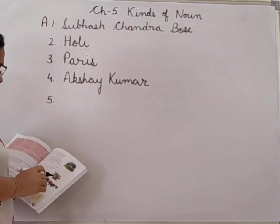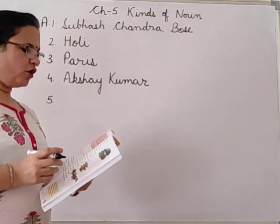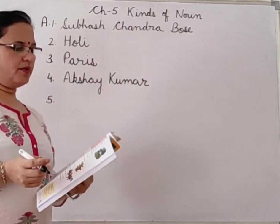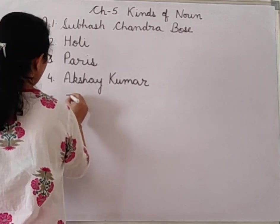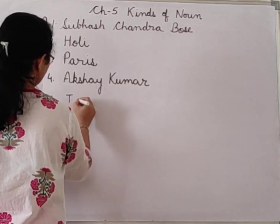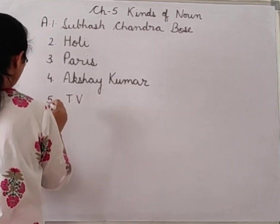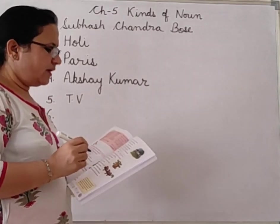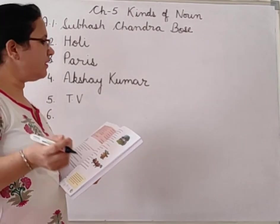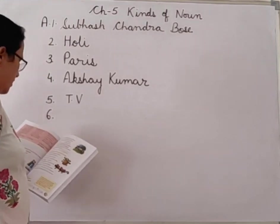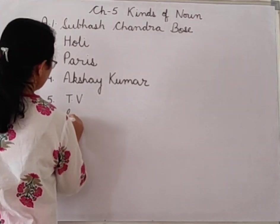Fifth: 'Watching Dash made me cry.' Watching TV or watching television made me cry. Sixth: 'Dash is my favorite hill station.' You can write any name of a hill station. Here I am writing Shimla — Shimla is my favorite hill station.